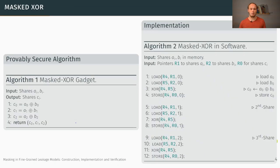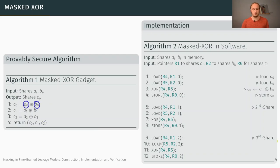Let's look at how an algorithm and its implementation differ. On the left-hand side we have a masked XOR gadget computing the XOR of shares Ai and Bi share-wise, producing output shares. This gadget comes with a correctness proof and a security proof in the probing model, specifying that for a number of observations — for example A0 and B0 or their XOR sums — no such observation set is able to reveal the secret.